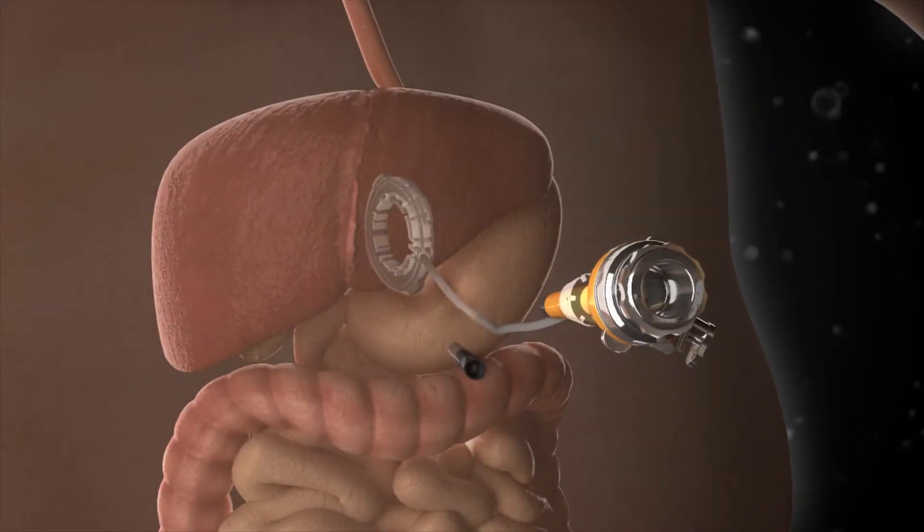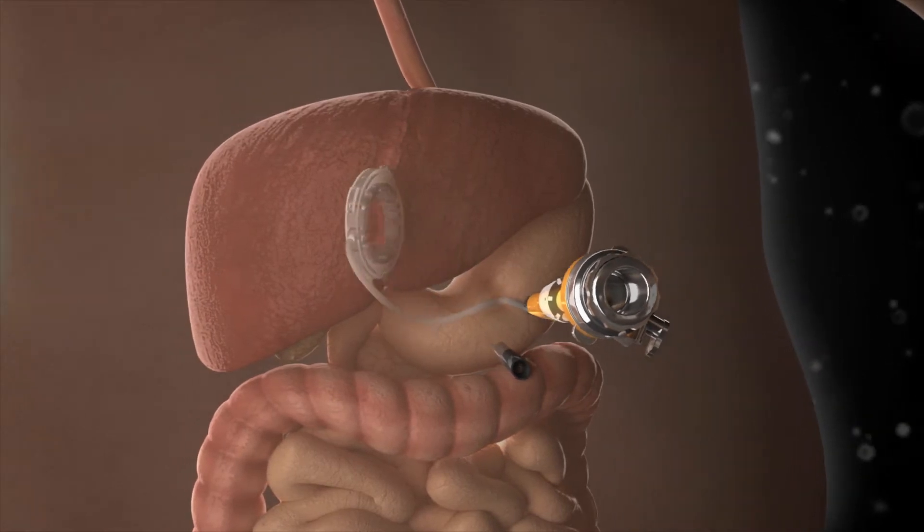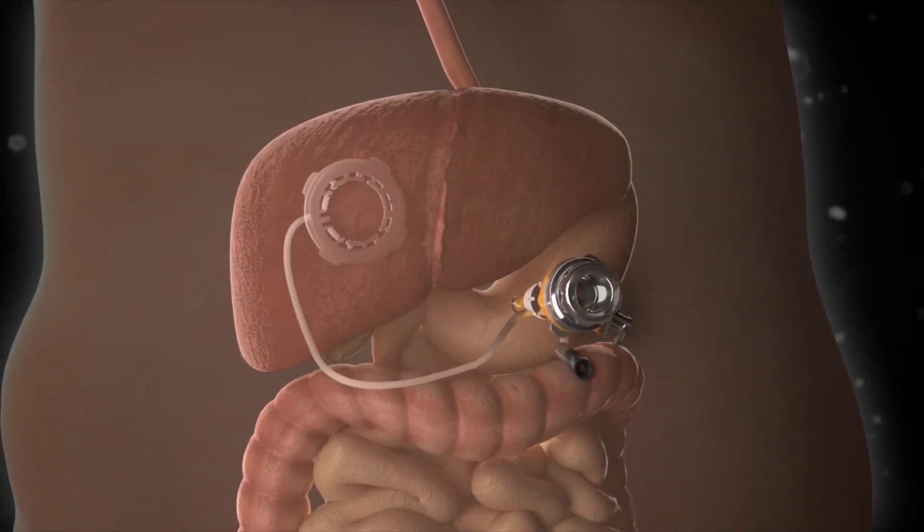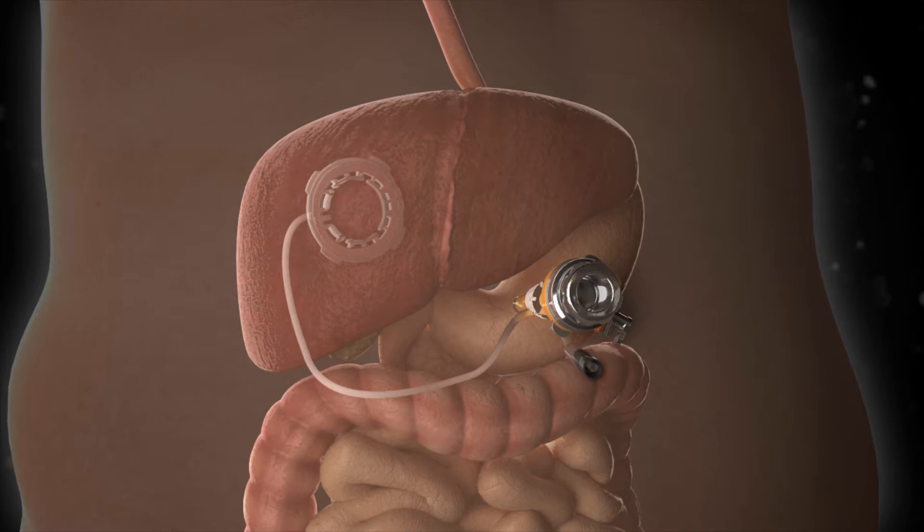The Livac retractor is inserted via an existing port incision and positioned between the liver and the diaphragm, and connected to suction.